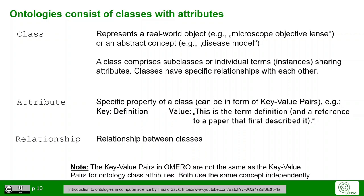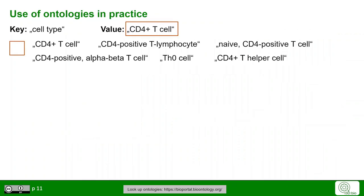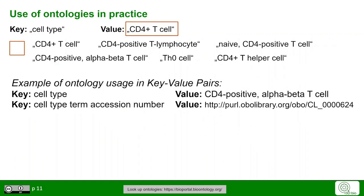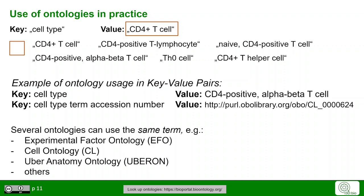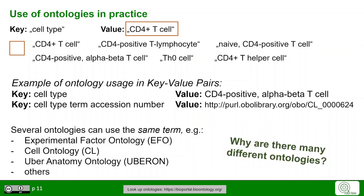Note that this key-value-pair annotation concept is the same as key-value pairs in Omero, but these are not the keys and values used for metadata annotation to our data. If we use an ontology for key-value-pair annotation, we look for the specific value offered by an ontology — in this case, 'CD4-positive alpha beta T cell'. As a second key-value pair, we add the URL that resolves to the ID of that specific term. Several ontologies can share terms; this term is found in the EFO ontology, the CELL ontology, the Uber Anatomy ontology, and others.